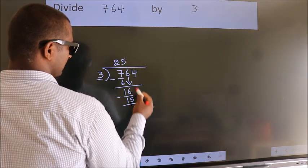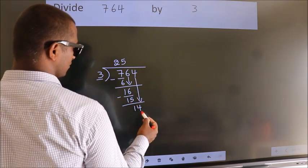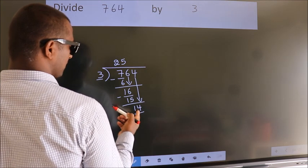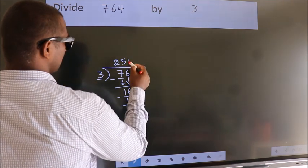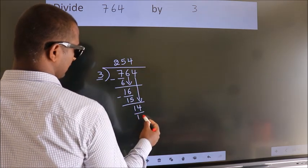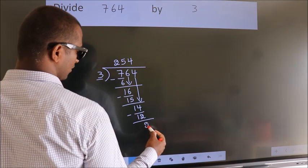After this, bring down the beside number. So 4 down. So 14. A number close to 14 in 3 table is 3 4's 12. Now we subtract. We get 2.